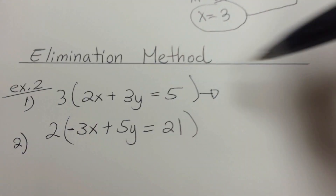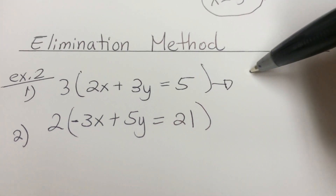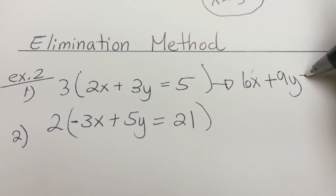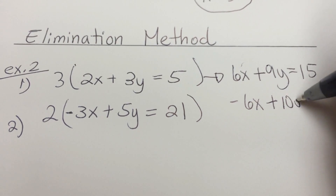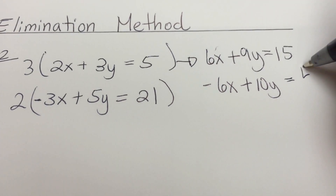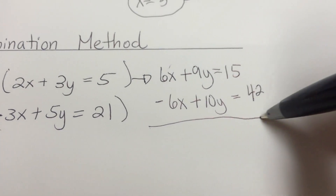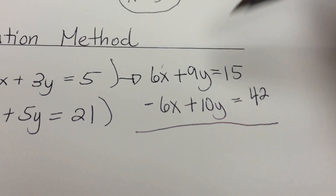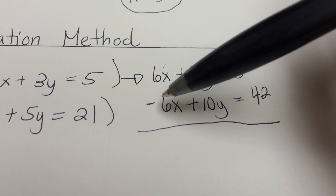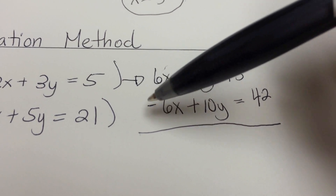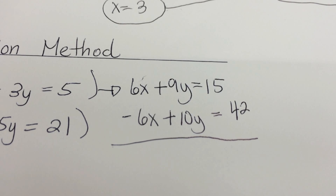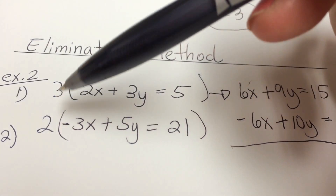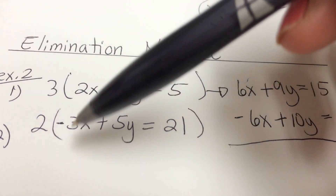After multiplying, equation 1 becomes 6x plus 9y equals 15, and equation 2 becomes negative 6x plus 10y equals 42. Now we have to decide whether to add or subtract. Some teachers say you must multiply by a negative, but I say you have more control than that. My concern was the lowest common number. The rule: if both signs on the matching variable are the same, control with a minus; if they're different, control with a plus.